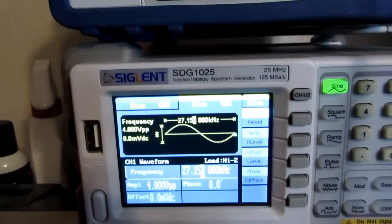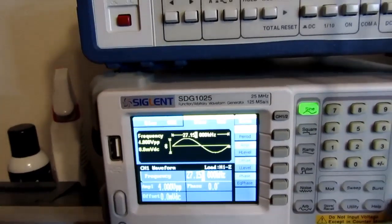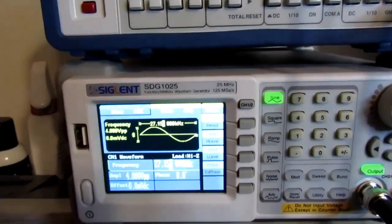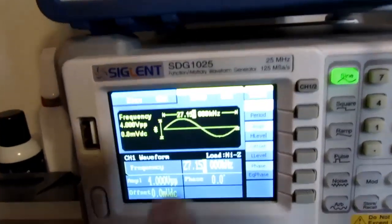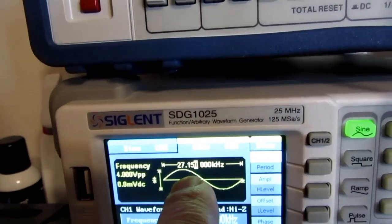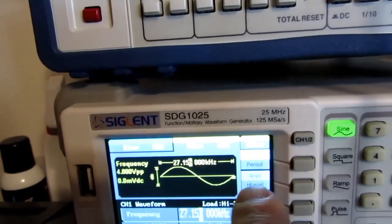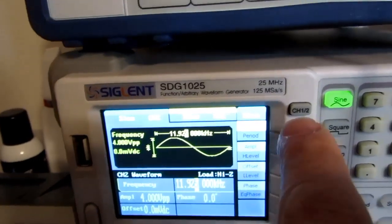Right now I've got it hooked up to my Siglent SDG 1025 dual channel function generator, and I have channel 1 set to 27.150 kilohertz and channel 2 set to 11.925 kilohertz.